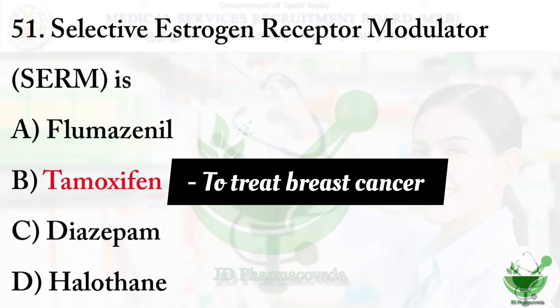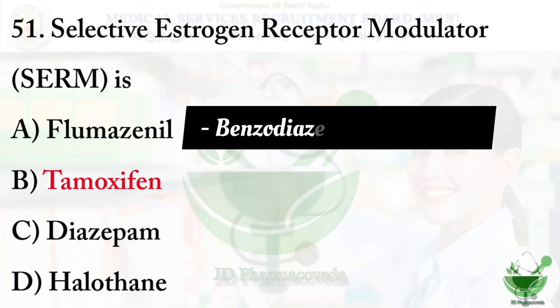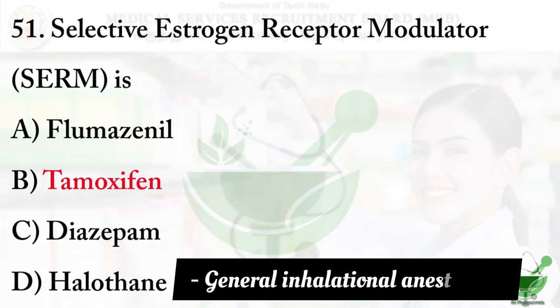Let's discuss the other options too. Flumazenil is a benzodiazepine antagonist; it can be given in benzodiazepine overdose cases. Diazepam is used to treat anxiety disorders or alcohol withdrawal symptoms. Halothane is a general inhalational anesthetic drug used for induction and maintenance of general anesthesia.